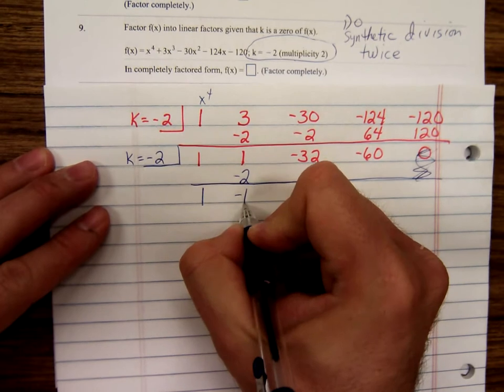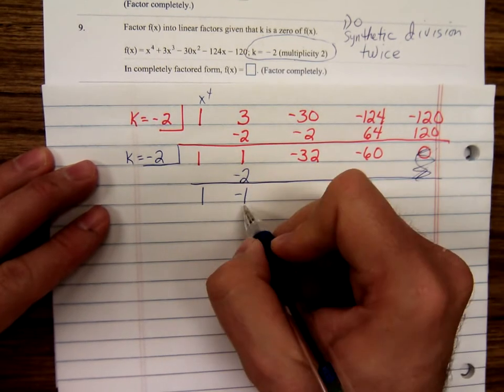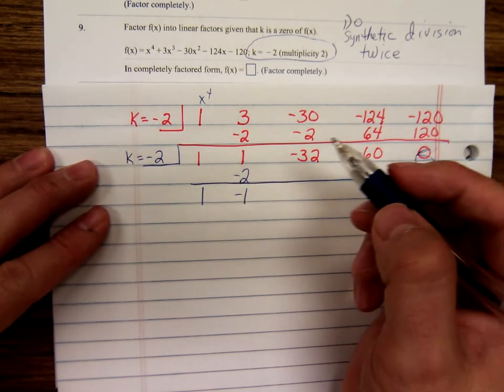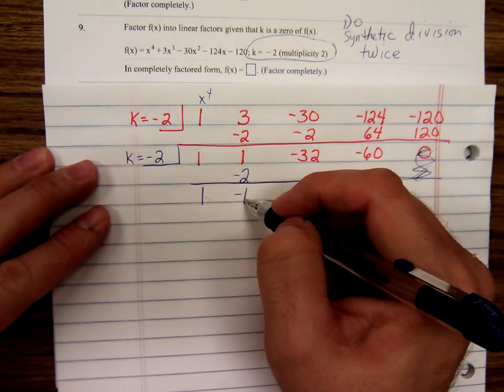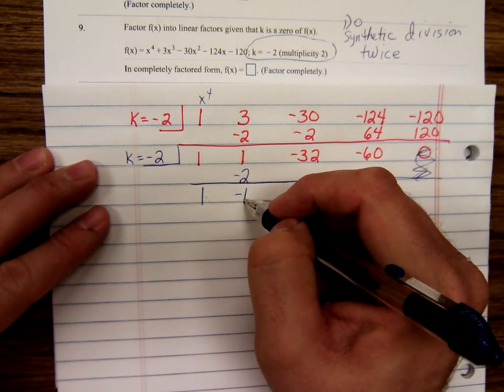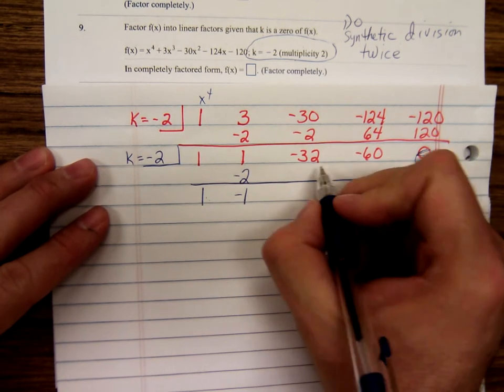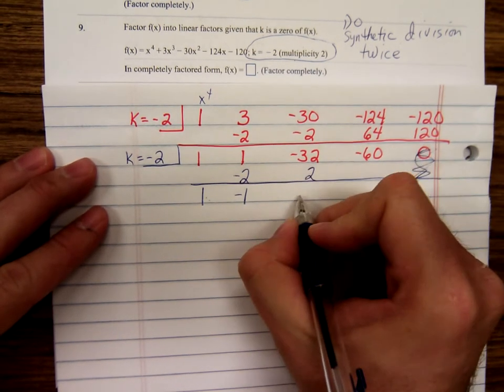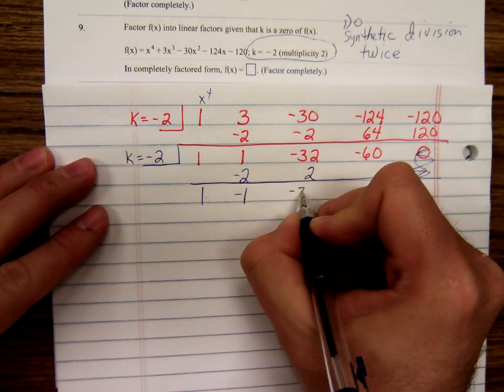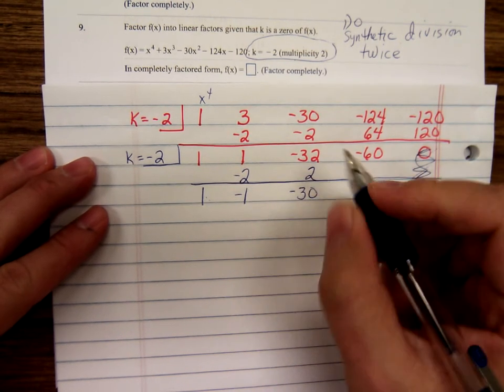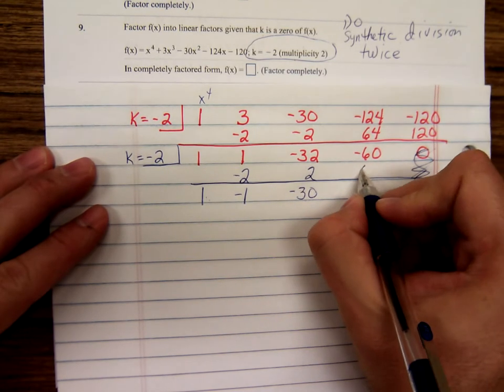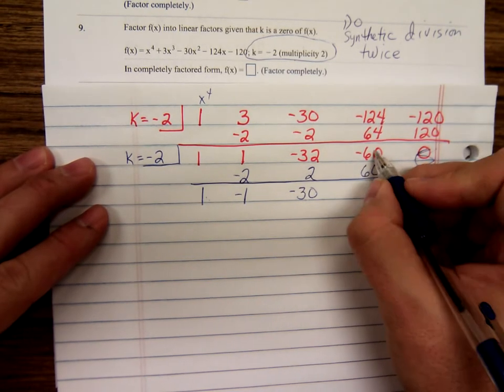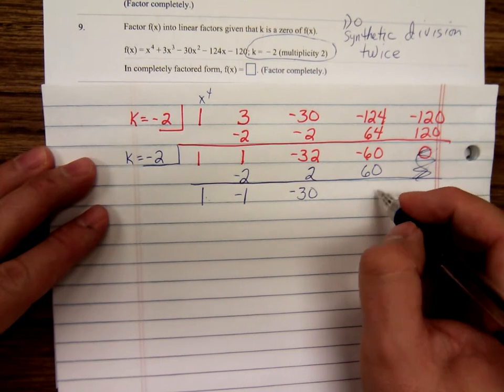Multiply. I add negative one times, one times negative two, negative two. One plus a negative two is negative one. Negative one times negative two is a positive two. Negative 30 plus, negative 32 plus two is negative 30. Negative 30 times negative two is a positive 60. Negative 60 plus 60, zero.